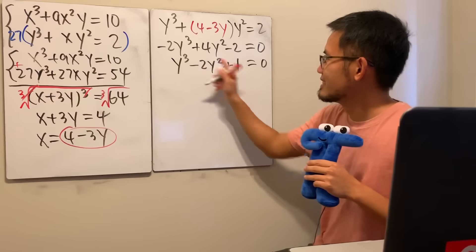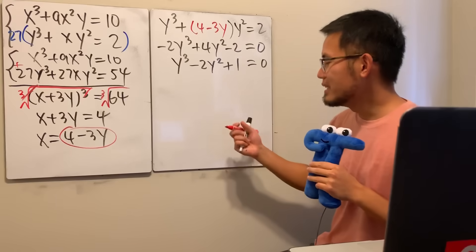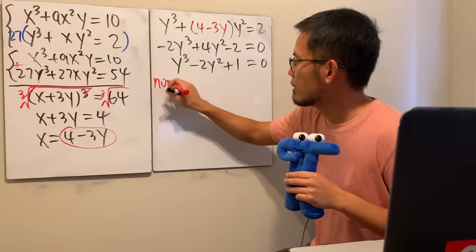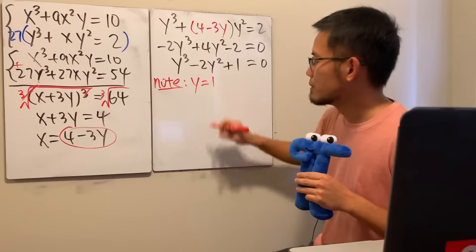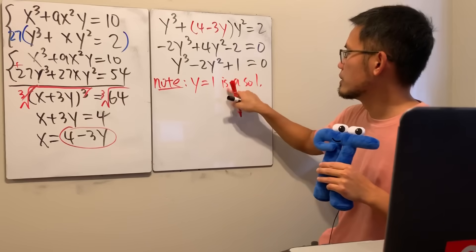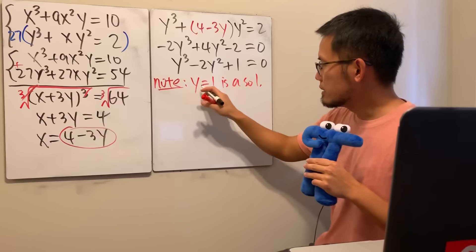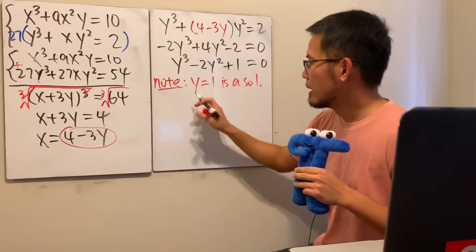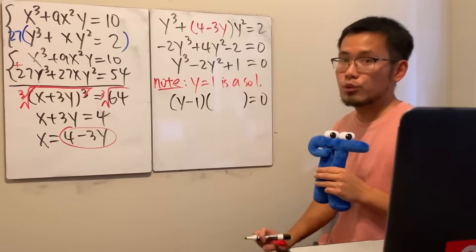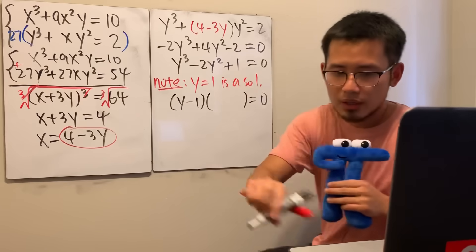This is a cubic equation, but we can guess and check. We can see that y = 1 is a solution: 1 − 2 + 1 = 0. So we can factor out (y − 1) from y³ − 2y² + 1.